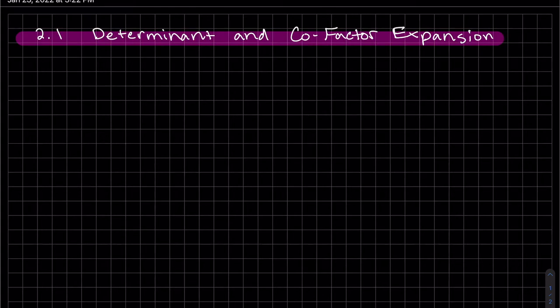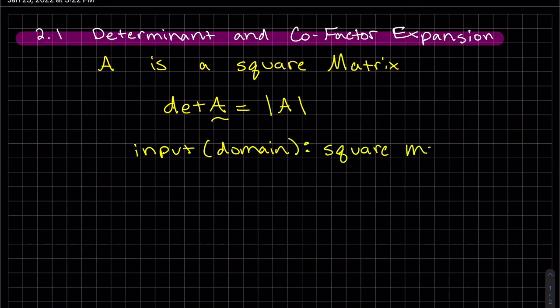Okay, we're going to talk about the determinant and cofactor expansion. In order to take a determinant, you do need to have a square matrix. Here's the notation. One thing to be very careful with, A is a matrix. So you're inputting A, which would be considered your domain, but your output is a real number.